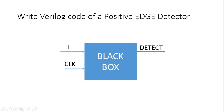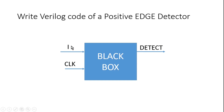Now let us move towards the next question. You have to write the Verilog code of a positive edge detector. The behavior of the positive edge detector is: whenever i varies from 0 to 1, the detect pulse should go high for one clock cycle, otherwise it should remain 0. Even if there is a negative edge on input i — that is when i varies from 1 to 0 — this detect pulse should not vary, it should remain 0. It should only go high whenever there is a positive edge.